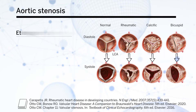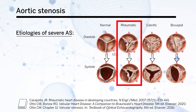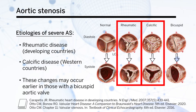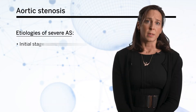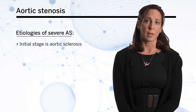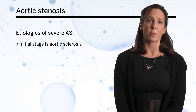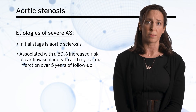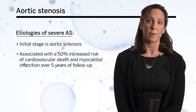In developing countries, rheumatic aortic stenosis is common, but in Western countries the most common form is calcific aortic stenosis, where there is degeneration of the aortic valve leaflets. These changes are often seen earlier among patients who have bicuspid aortic valve. The initial stage is aortic sclerosis and is often associated with about 50% increased risk of cardiovascular death and myocardial infarction over five years of follow-up.